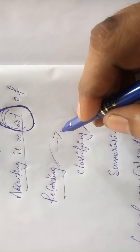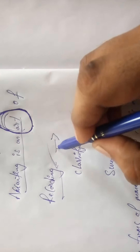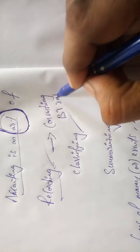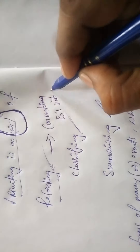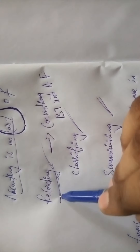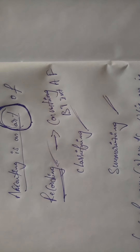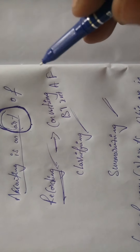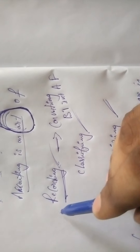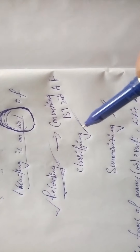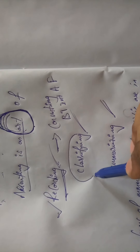In the recording step, the activity we perform is converting all business transactions into accounting format. So in the first step of accounting, we convert all business transactions into accounting format. Coming to the second step — the second step of accounting is classifying.